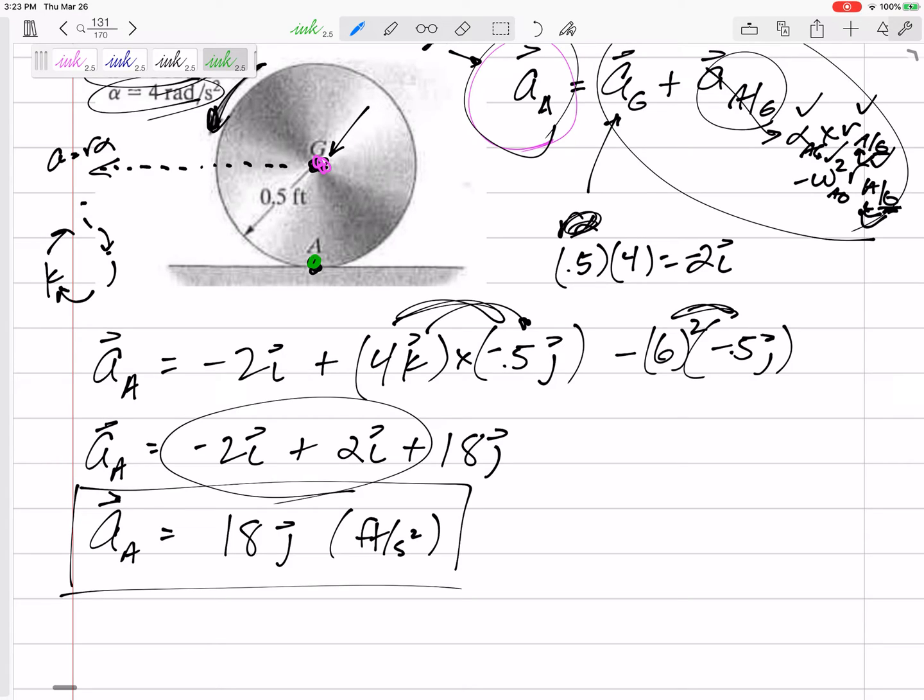But if I put a light on the edge of a wheel that's rolling without slipping, and I took a long exposure photo, go out to Borgard in the dark, put a point on a wheel and take a long exposure photo, we could trace the path of that point. And that point would go like this.